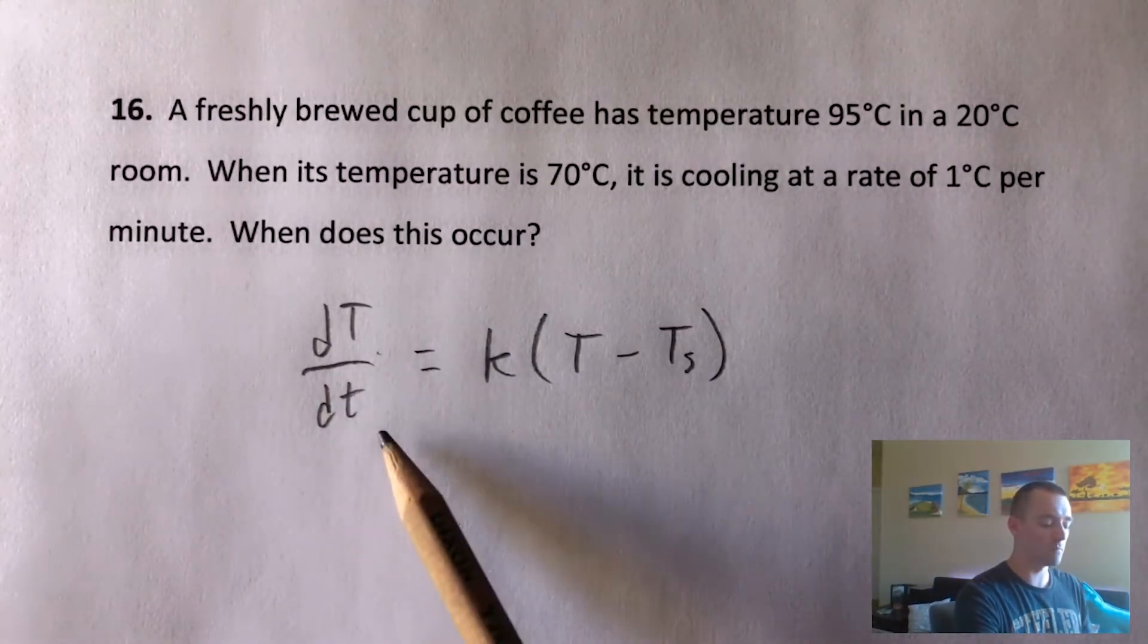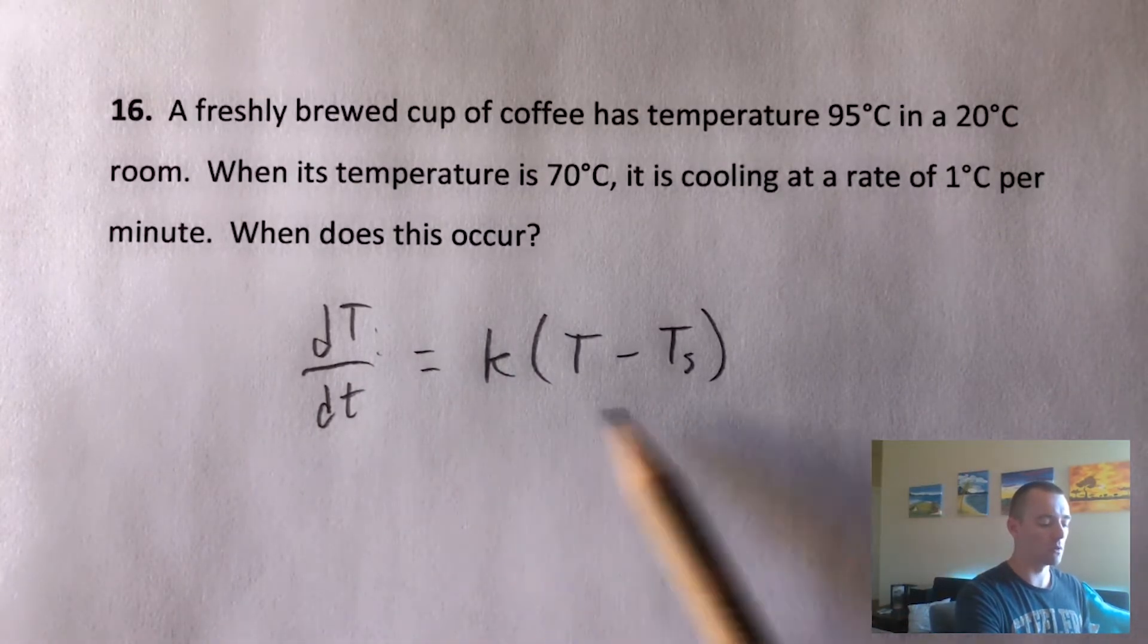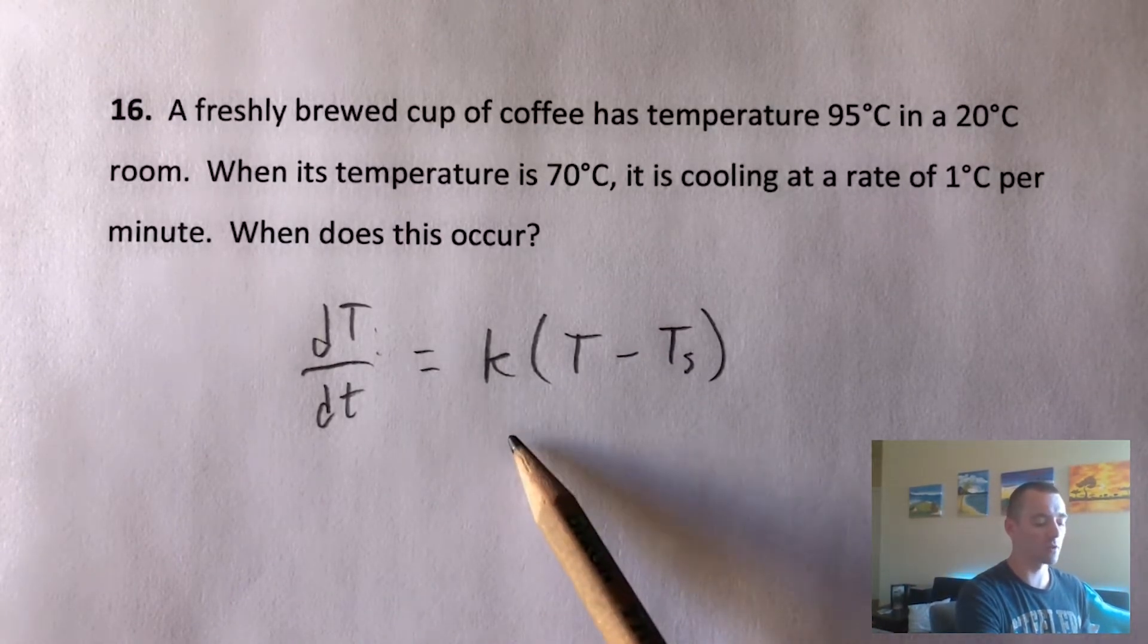We know that the rate of change of the temperature with respect to time - big T is temperature, little t is time - is going to be equal to this equation here. So K is some unknown constant we're going to have to solve for.